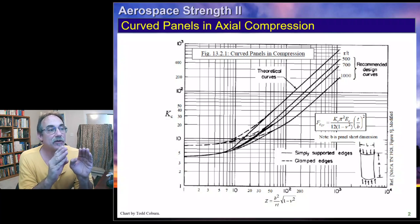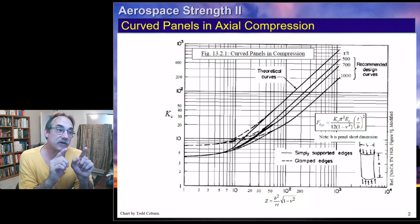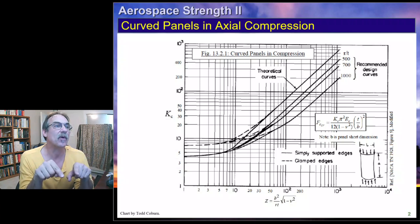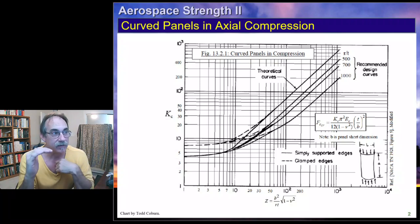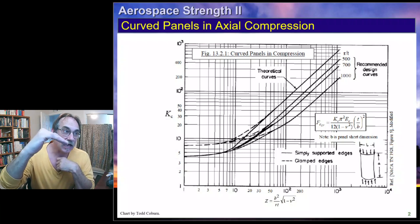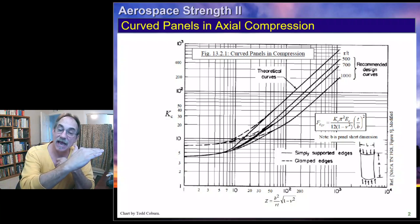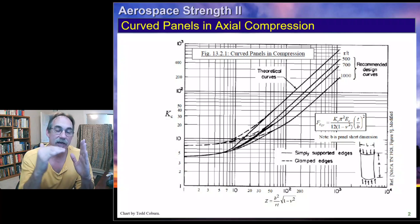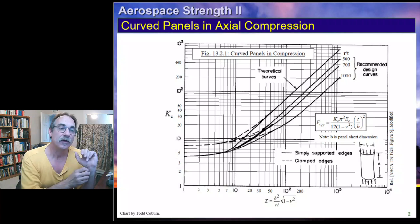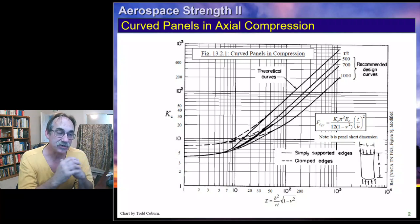You'll notice that all these values here — the solid lines — are for simply supported edges on all four edges. And if we end up having clamped edges, then we would diverge onto that dashed line. That means that if your Z-parameter is very large, those two curves will be identical. But as the Z-parameter gets smaller, those curves deviate from each other.